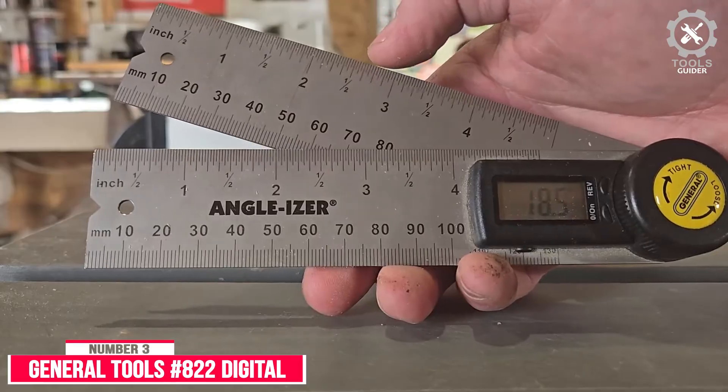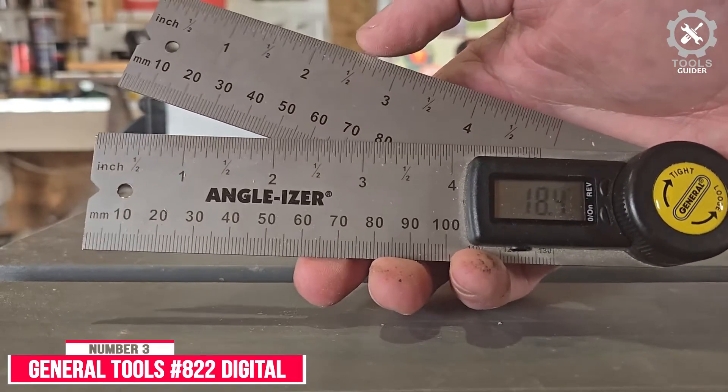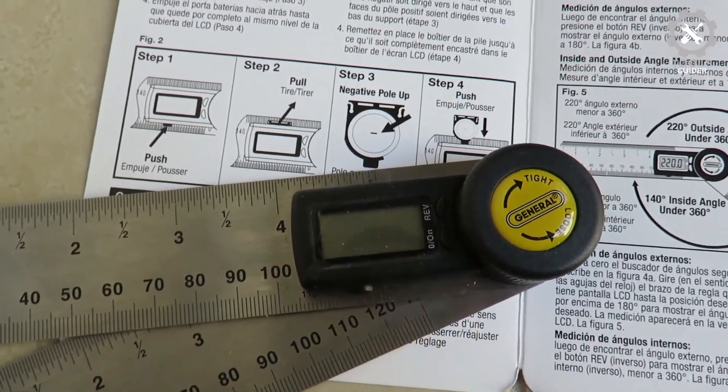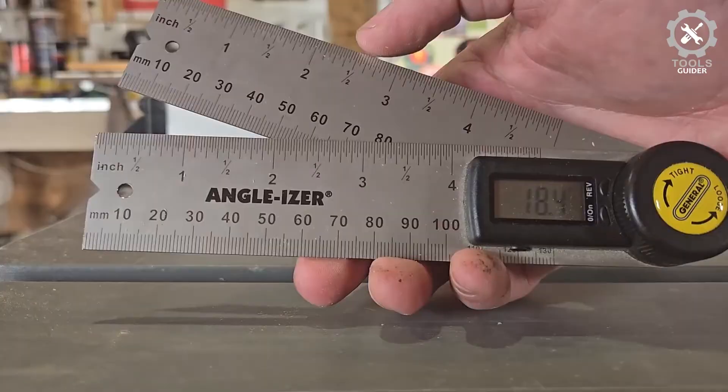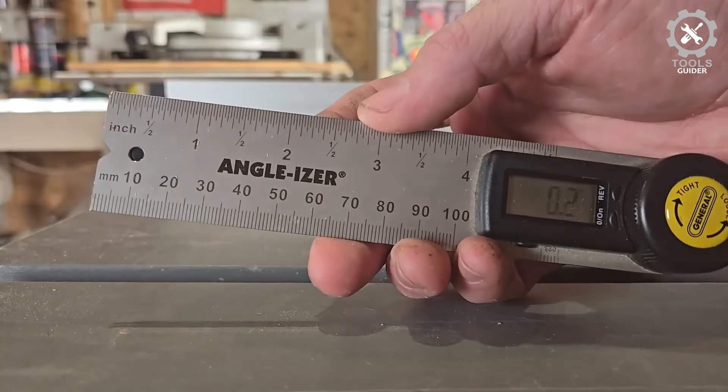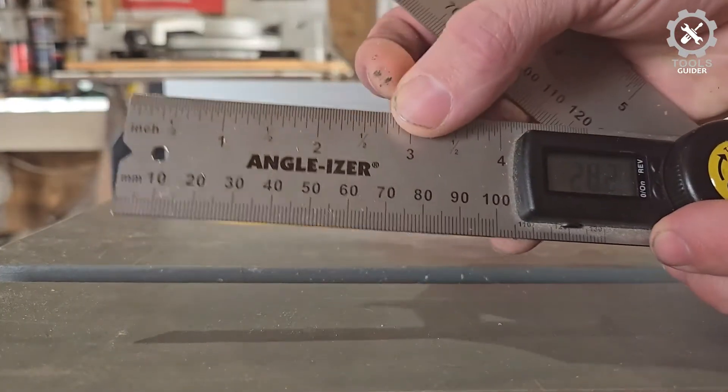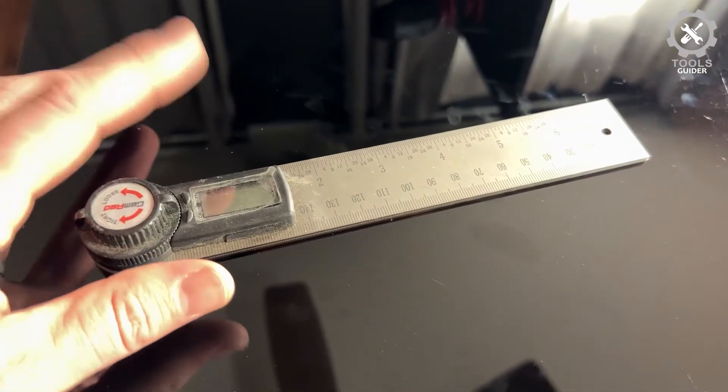The General Tools Number 822 Digital Angle Finder Ruler is ideal for finding angles and tight spots. With the lock feature, the user can improve accuracy and save time when finding the measurement. It's perfect for doing work on framing and flooring.